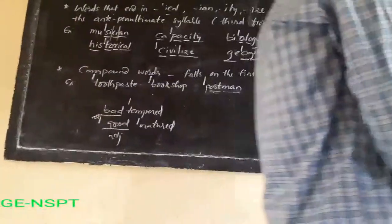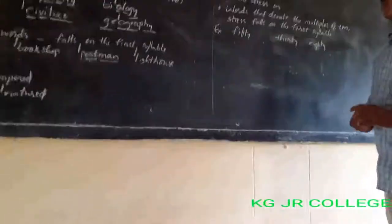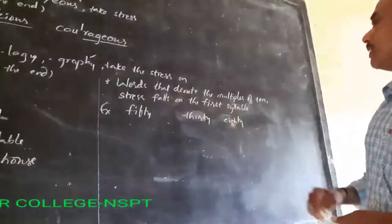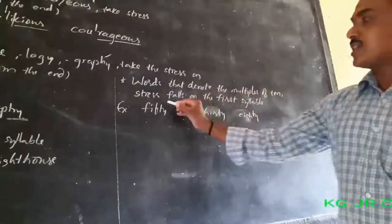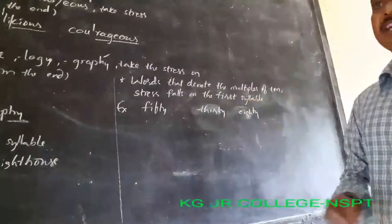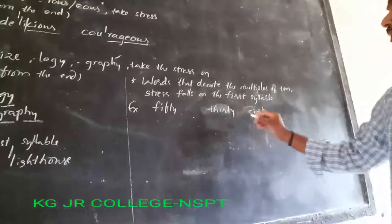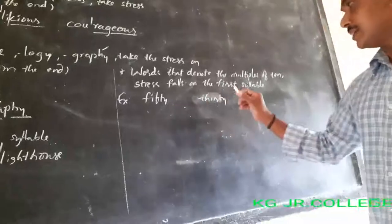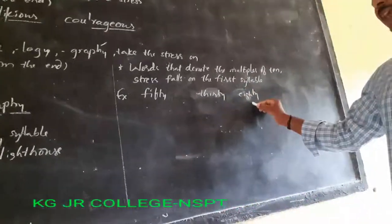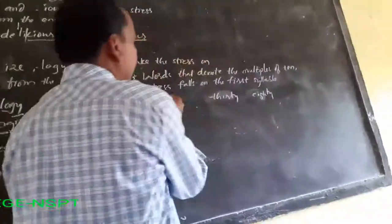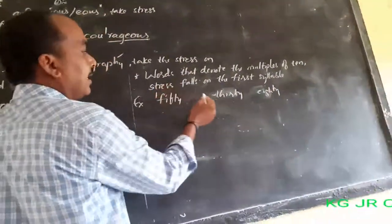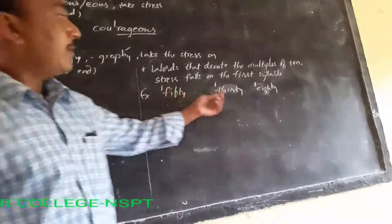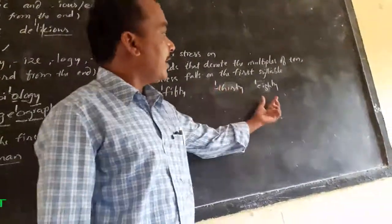One more rule — the last and final rule: words that denote multiples of 10. Stress falls on the first syllable. For example, 50, 30, 80 — these are all multiples of 10. So always the stress will be at the beginning: FIF-ty, THIR-ty, EIGH-ty.